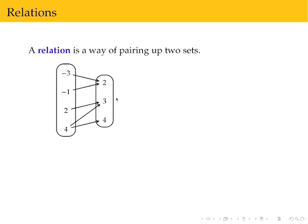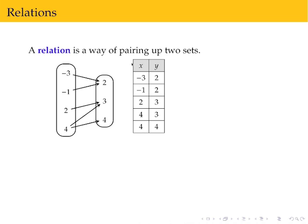We can express this relation in different ways. We can make a table. Traditionally, the x is the value from the first set, the y is the value from the second set, and we make a table listing out the pairings.